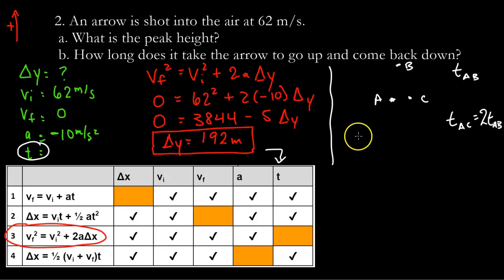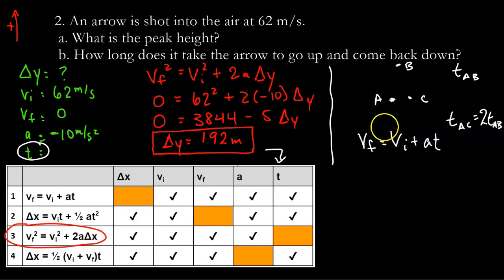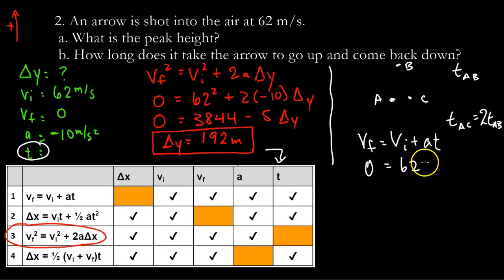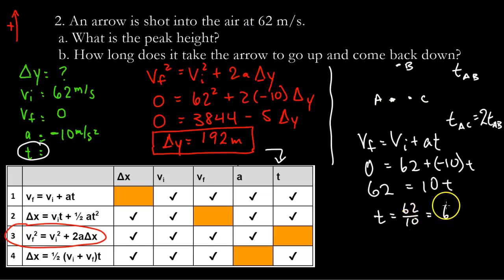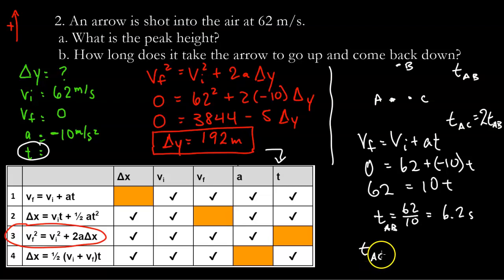To find the time from A to B I'll use vf equals vi plus a*t. From A to B: vf is 0, vi is 62, and acceleration is negative 10, so 0 equals 62 plus negative 10*t. Moving 62 over gives 10t equals 62, so t equals 62 divided by 10, which is 6.2 seconds. That's the time from A to B. The total time from A to C is 2 times 6.2, which is 12.4 seconds.